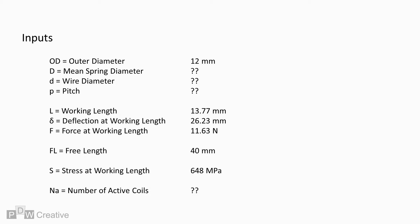Here I've listed a set of variables taken from a spring design. Crucially, I've left mean diameter, wire diameter, pitch and the number of active coils blank.